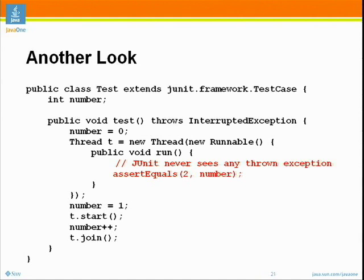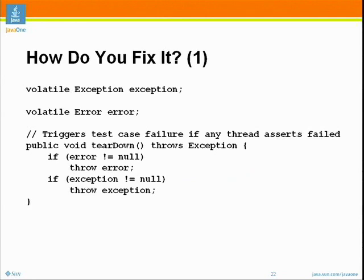It turns out that the assertion will sometimes pass and sometimes fail — those of you with that intuition were halfway there. There was a clue in the puzzle: it was called a racy little number because it is in fact a race condition. So how do we fix this? Unfortunately this is not a one-line fix. In JUnit, if you need to start threads and want to report exceptions thrown in those threads as failures, you need some way to get the exception propagated back to the right place. We're going to declare fields that will hold an exception or error if they're thrown.